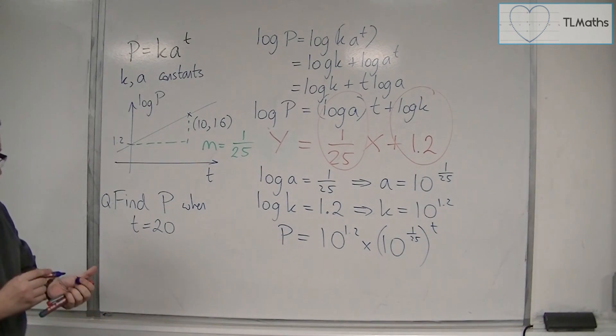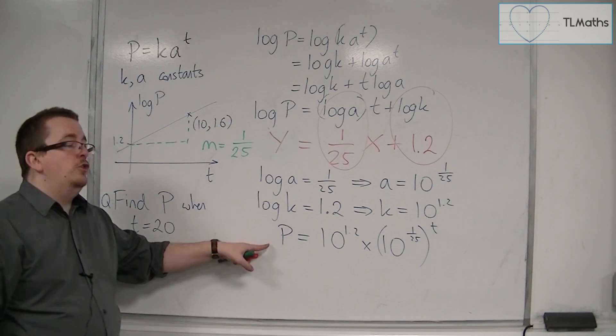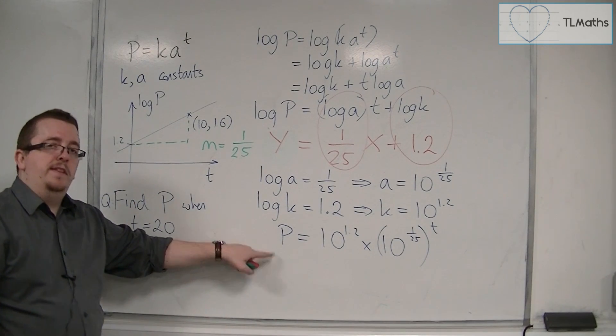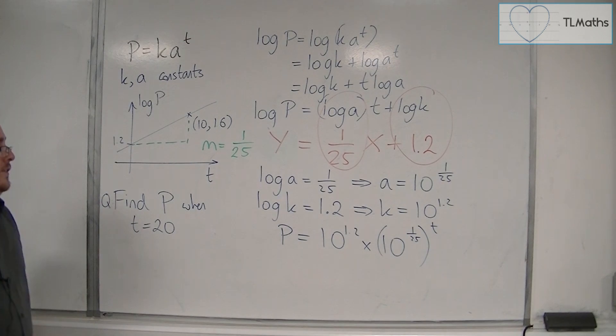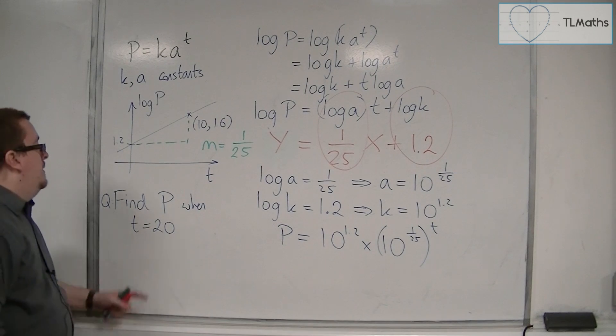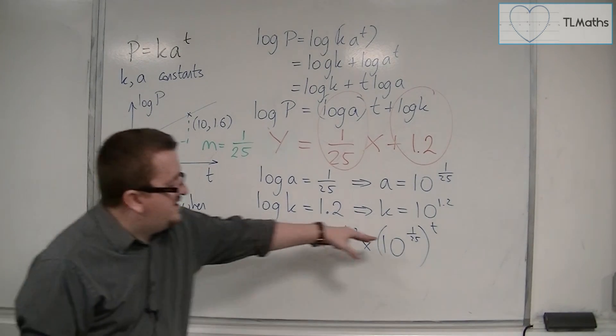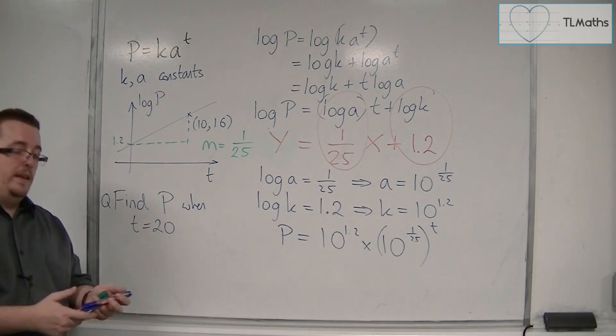That is the equation of the curve that would fit the original data. The original data that the scientist collected. And then we might have a final question, which looks something like this. Find P when T is equal to 20, for example. So I just need to substitute T is 20 into this.